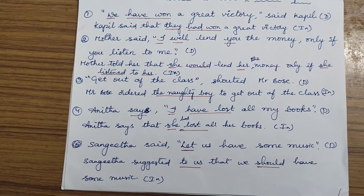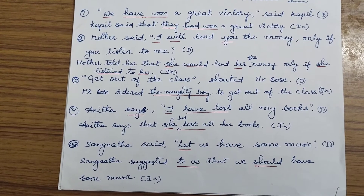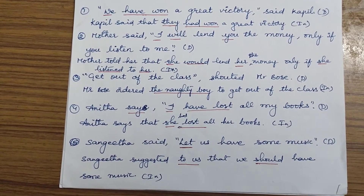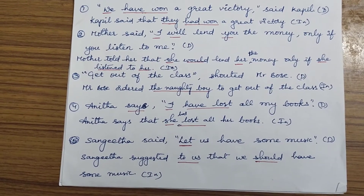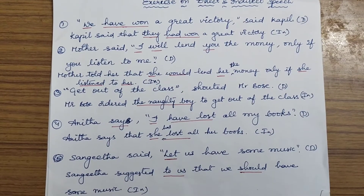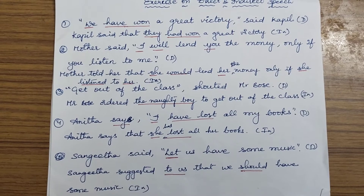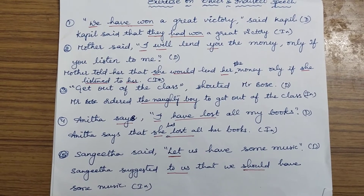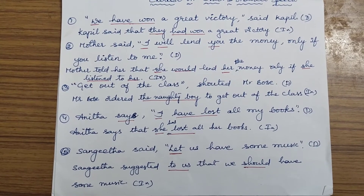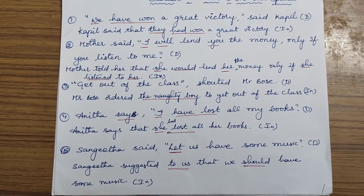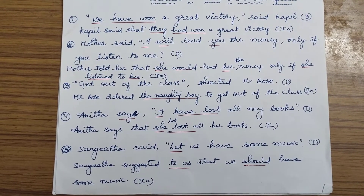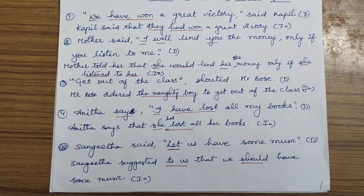Second one: Mother said, 'I will lend you the money only if you listen to me.' This is changed to: 'Mother told her that she would lend her the money only if she listened to her.' Here, first person 'I' is changed to 'she' because the subject is mother. First person changes according to the subject, second person changes according to the object, and third person remains unchanged.